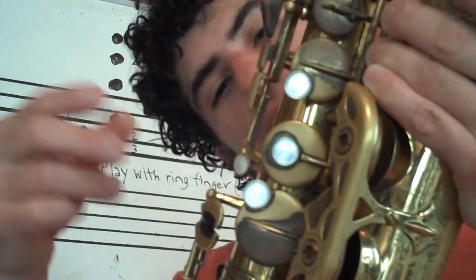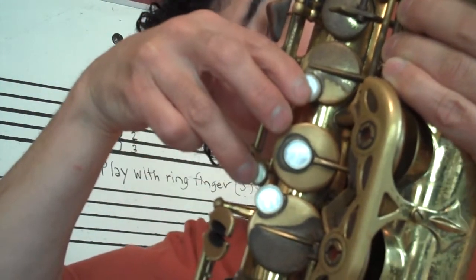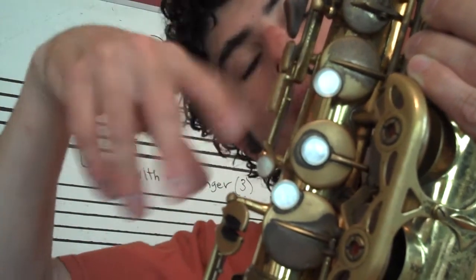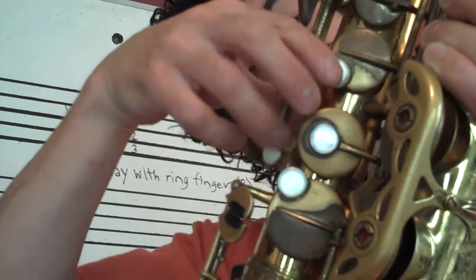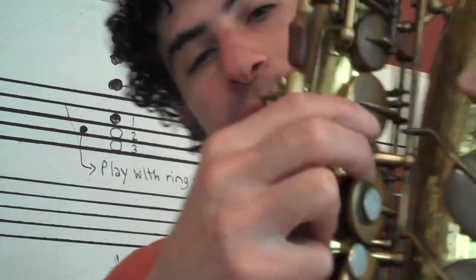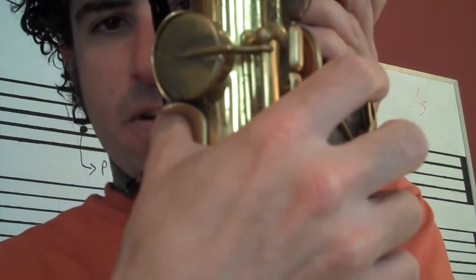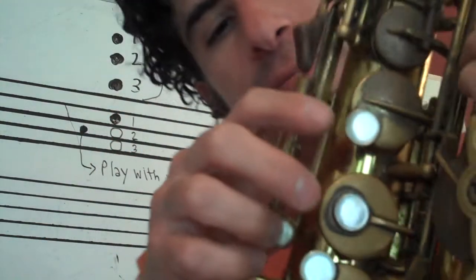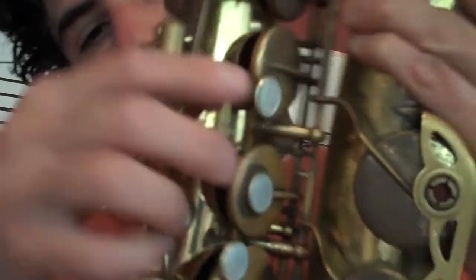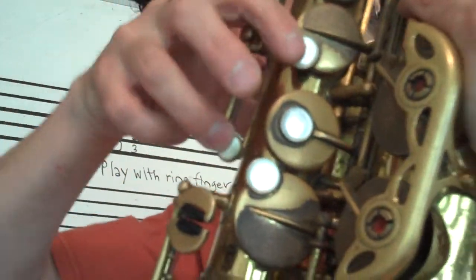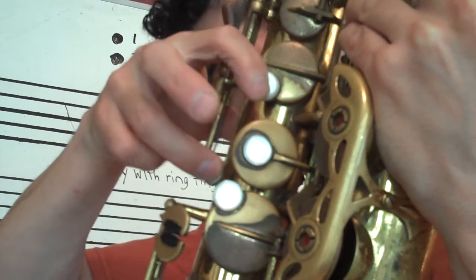So this is really particularly great for chromaticism, chromatic notes going up and down. Or even maybe a trill. Hopefully you can see that there. I forgot to turn the horn around. So that's where that key lives, and then the button is right there. So then we'll play that with our ring finger. Just like that.